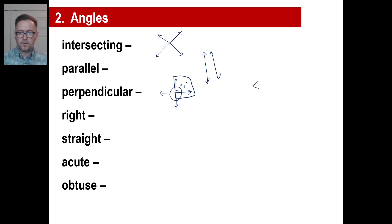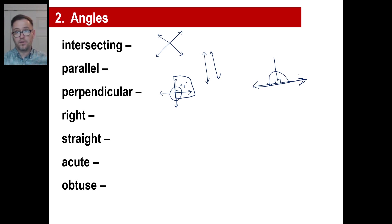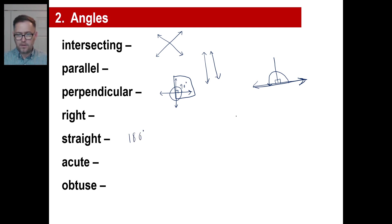A straight angle is just a line. If you had two right angles right next to each other, that would be one straight angle — 90 and 90 — so a straight angle is 180 degrees. An acute angle is less than 90 degrees. An obtuse angle is more than 90 degrees.